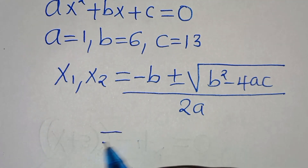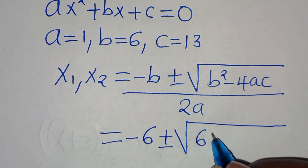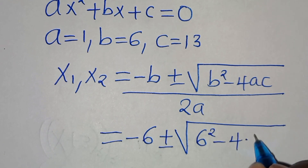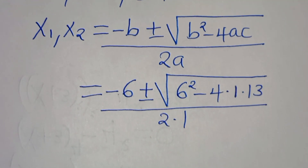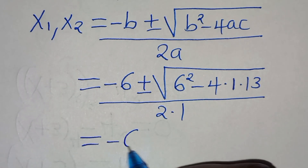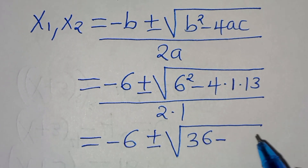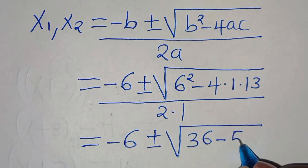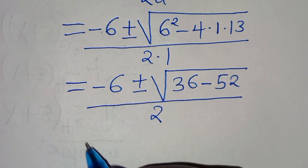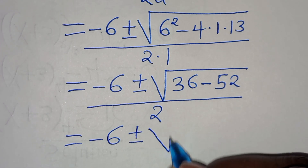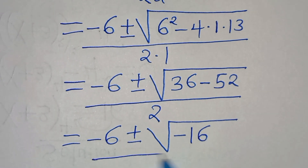Substituting a, b, and c into the formula, we get minus 6 plus or minus the square root of 6 squared minus 4 times 1 times 13, divided by 2 times 1. So this is minus 6 plus or minus the square root of 36 minus 52, divided by 2. That gives us minus 6 plus or minus the square root of negative 16, divided by 2.